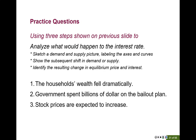Use the three steps shown in the previous slide to analyze what happened to the interest rate. You are going to use the supply of the bond and the demand of the bond together to analyze the equilibrium interest rate. Here we have three questions. Let's start with question number one: household wealth fell dramatically. What will happen to the interest rate after this event happened?